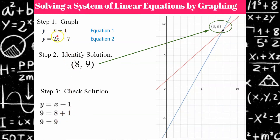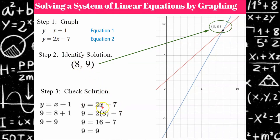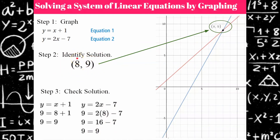Now we need to check the second equation. y equals 2x minus 7 — replacing x with 8 and y with 9. y equals 2 times 8 minus 7. 2 times 8 is 16, and 16 minus 7 is 9, so it checks. Now I'm sure that I've graphed this correctly and (8, 9) is indeed the solution to the problem.